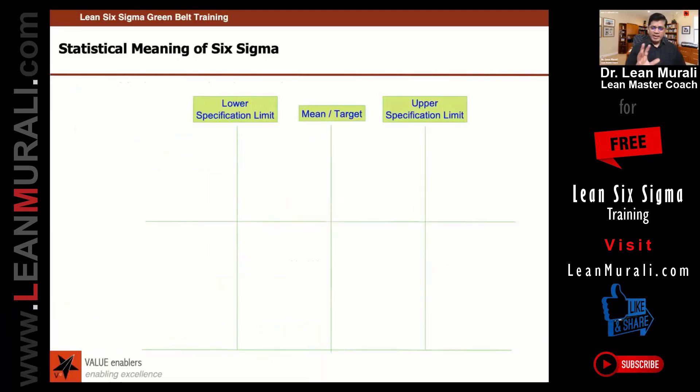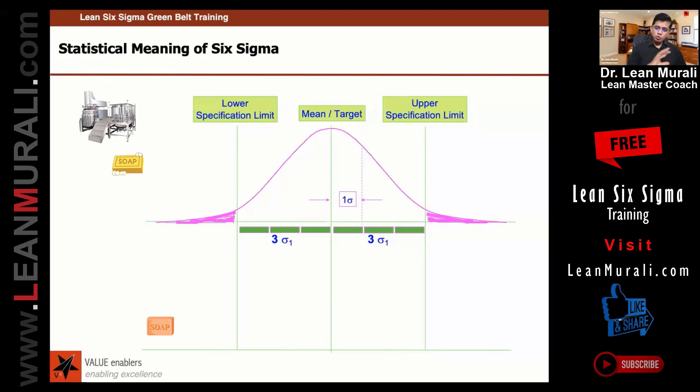Now I will quickly explain to you the statistical meaning of 6 sigma. There is a mean or target, there is an upper specification limit, there is a lower specification limit. What I have explained to you, suppose if it is plus or minus 3 standard deviations, suppose one set of soaps I have taken and two set of soaps, one machine and the other machine. New machine and a very old machine.